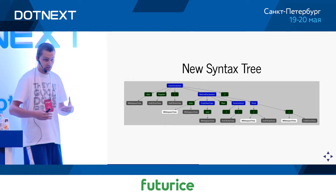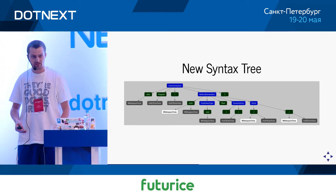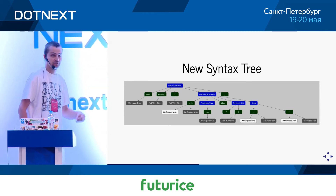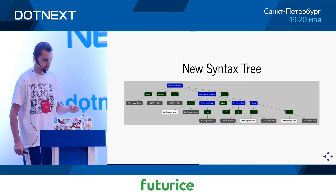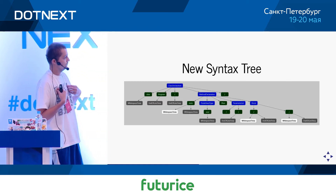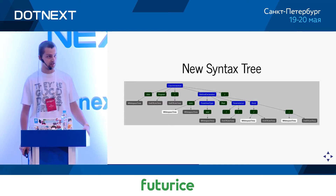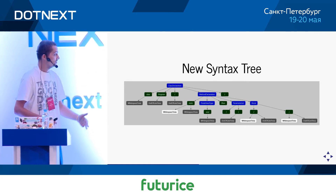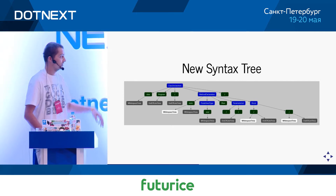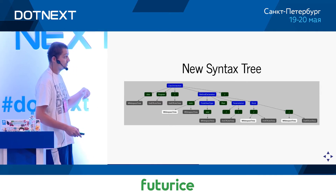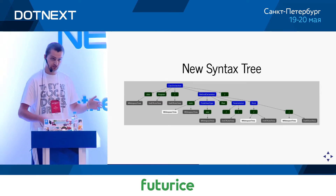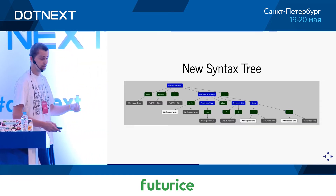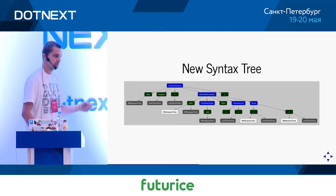Syntax trees are only the first step into the code analysis world. They represent the structure of the program and have all the lexical information, but they don't have any semantic information. For example, if I wanted to understand where a class is being used — where it's being instantiated, subclassed, used as a generic parameter — none of that information is available through a syntax tree. Instead, we can reach into the semantic model, which is a further step in the compiler pipeline backed by the compilation.